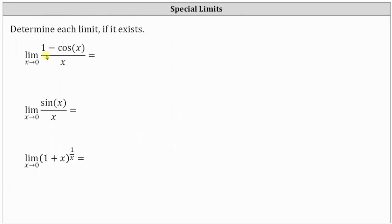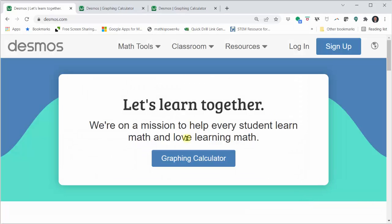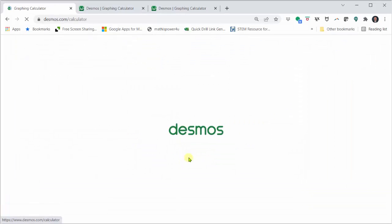First, we have the limit of the quantity one minus cosine x divided by x as x approaches zero. Let's go to Desmos.com and click graphing calculator.